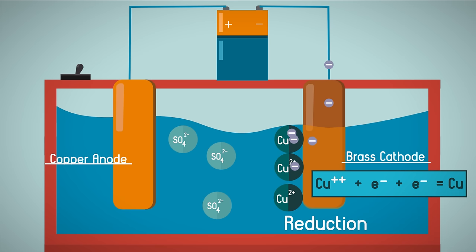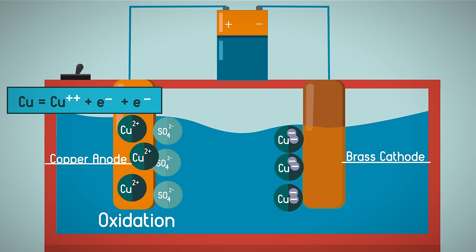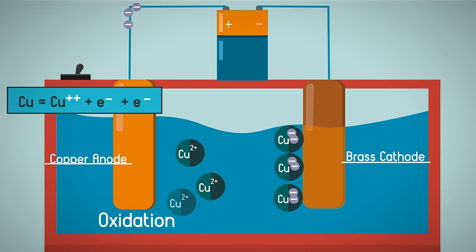The sulfate ions are negatively charged and so are attracted to the positively charged copper anode. The current supplied to the anode causes the copper atoms to oxidize, which is lose electrons, and then dissolve into the electrolyte solution.